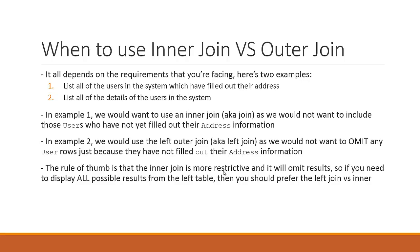Here are two examples. Example one: list all the users in the system which have filled out their address. Example two: list all the details of the users in the system. Do you see how those two are similar in terms of what they're going to do, but different in one really key aspect? One of them says to only list the users that have filled out their address. So for example one, we would want to use an inner join — also known as just a join.